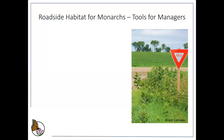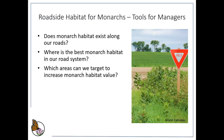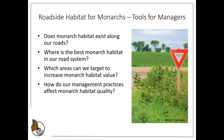I'd like to start by talking about some of the questions that we think can be addressed with our rapid assessment tool and habitat quality calculator. Some roadside managers might like to know if they have monarch habitat existing along their roadways, where the habitat is best in their road system, and where areas could be improved. Another question our tool will help with is addressing how management affects habitat quality — areas targeted for weed control or modified mowing regimes can be monitored to see how the habitat is responding.